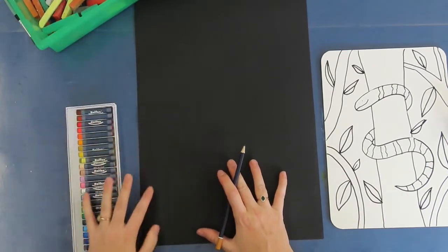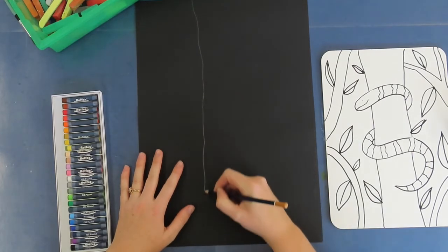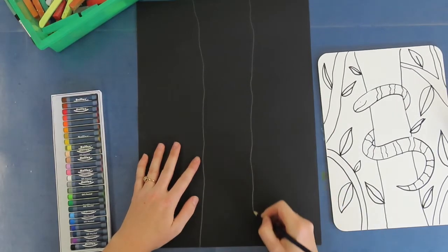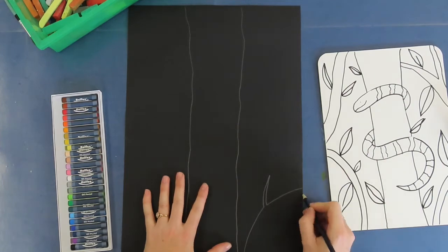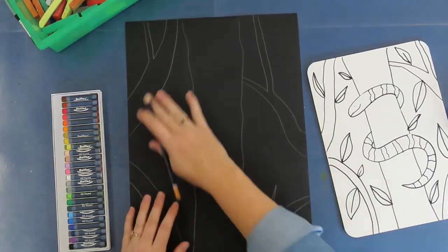So step number one is we need to draw the tree that the snake's going to be crawling up on. I'm going to draw one long line from the top of my page all the way down to the bottom, and then I'm going to draw another one. It needs to be quite nice and thick so that our snake has enough chance to wrap itself around it. Then you can draw your branches.